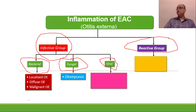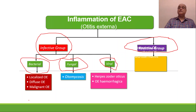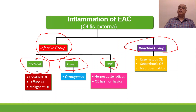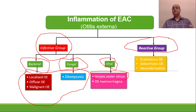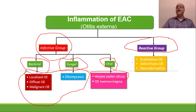Fungal infection of the ear is called otomycosis. Viral infections include herpes zoster oticus and otitis externa hemorrhagica. The reactive group includes eczematous otitis externa, seborrheic otitis externa, and neurodermatitis. We have already covered the bacterial group, fungal infections, and herpes zoster oticus in detail, so today we focus on otitis externa hemorrhagica.